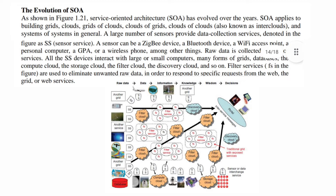Raw data is collected by sensor services collectors. All sensor/SS devices interact with large or small computers across many forms of grids, databases, compute cloud, storage cloud, filter cloud, disk cloud, and so on. Filter services (FS) are used to eliminate unwanted data in order to respond to specific requests from the web, the grid, or web services.